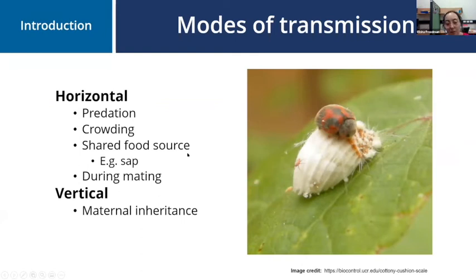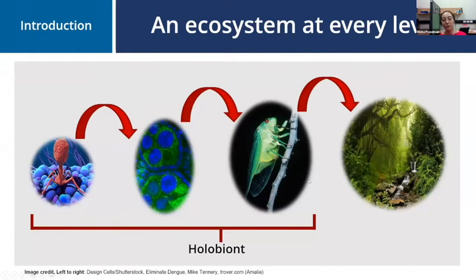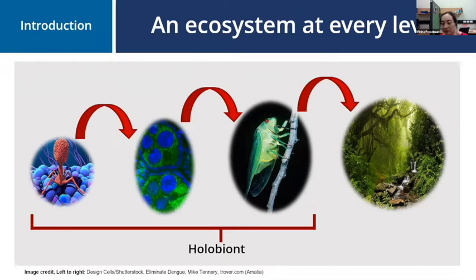Endosymbionts can have a range of different influences on their insect hosts — you can have parasitic endosymbionts and mutualist endosymbionts. These species often demonstrate a wide range of facultative impacts depending on the host geography and the evolutionary history they share with their hosts. They can be spread via horizontal or vertical transmission — horizontally through predation, crowding such as in woodlouse, shared food sources common in phytophagous insects such as scales, and then maternal inheritance through the maternal line. All multicellular organisms are essentially an environment themselves, and this collective group is known as the holobiont, which affects each other's ecology and evolution. It's very important to consider the role that endosymbionts play when looking at the evolutionary history and ecology of a multicellular organism, especially an insect.